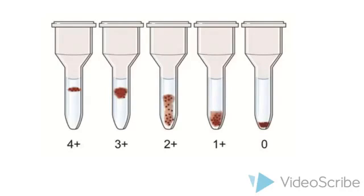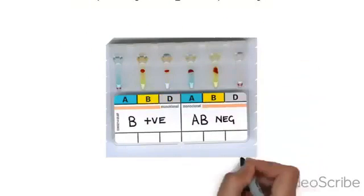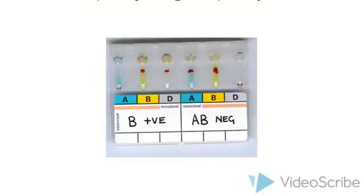On the other hand, 1+ indicates some small-sized clumps of agglutinated cells, most frequently in the lower half of the gel column. A small pellet may also be observed at the bottom. 0 indicates a well-defined pellet of non-agglutinated red cells at the bottom of the gel column with no visible agglutinated cells in the rest of the gel column.